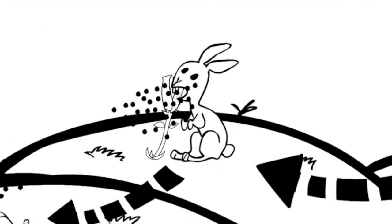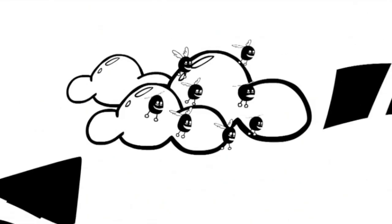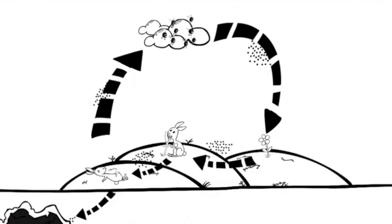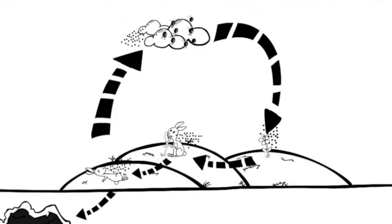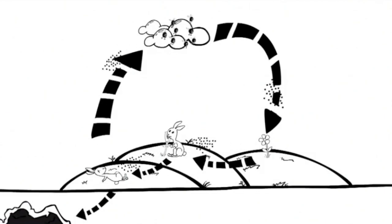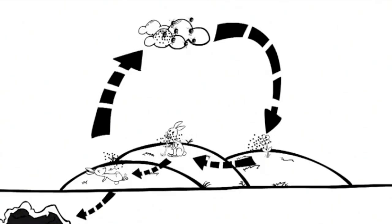Animals then eat the plants absorbing the carbon, and later poop it out or die. This carbon is either absorbed into the ground or released into the atmosphere. This process is repeated.